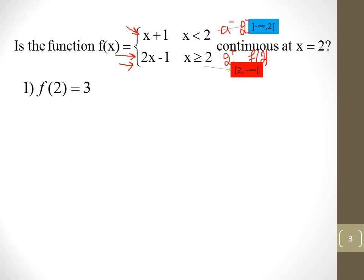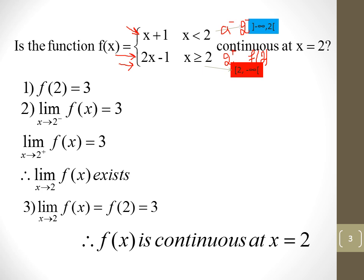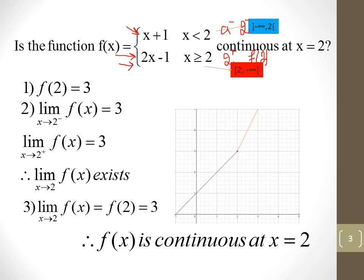The limit when x tends to 2-minus: we replace using the first piece, which gives 3. The limit when x tends to 2-plus: we replace using the second piece, which also gives 3. So the limit of f of x when x tends to 2 exists, which means this function is continuous at 2. In order to study the continuity of a function, you compute the limit from the left, the limit from the right, and f of 2 — you should get the same answer.